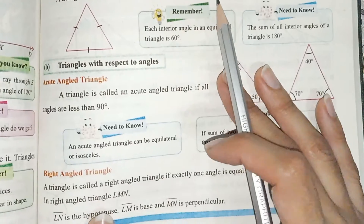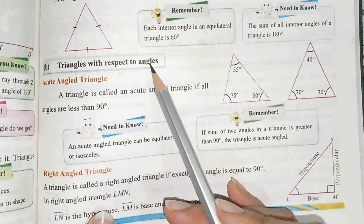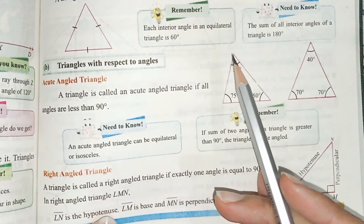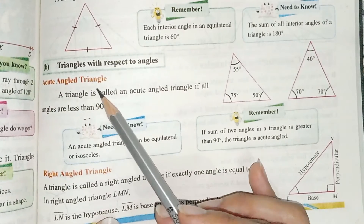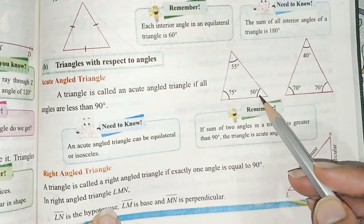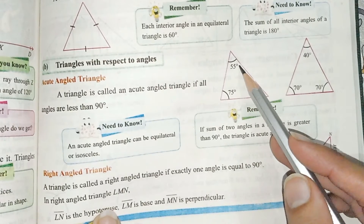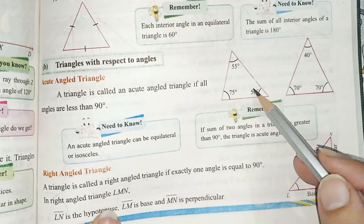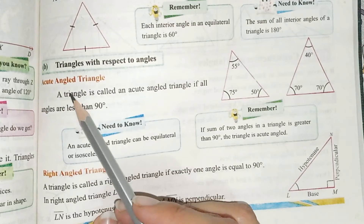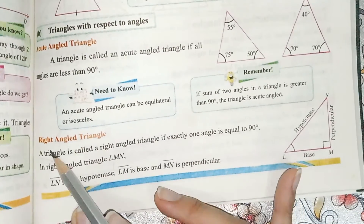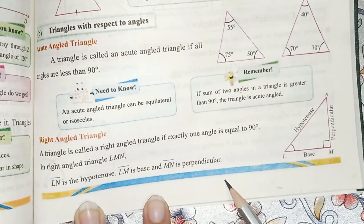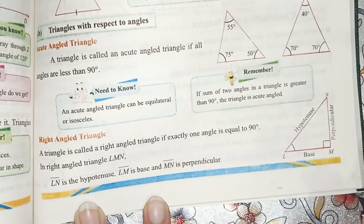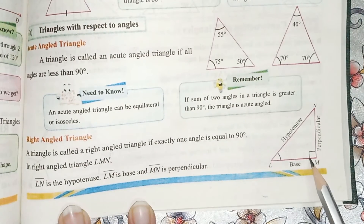Next, with respect to their angles, the triangles are different. The first is the acute angle triangle — this triangle is an acute angle triangle. Next is the right angle triangle — one angle is equal to 90 degrees. This is a right angled triangle.